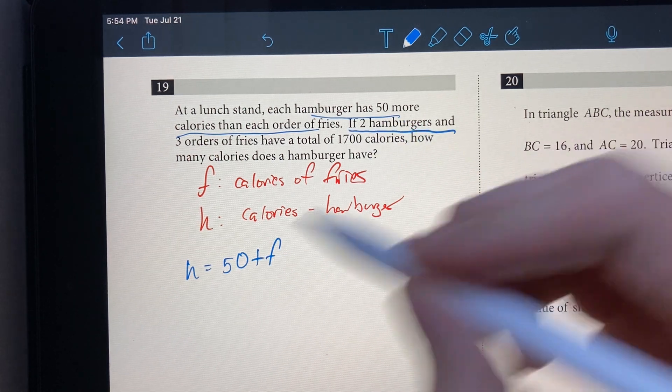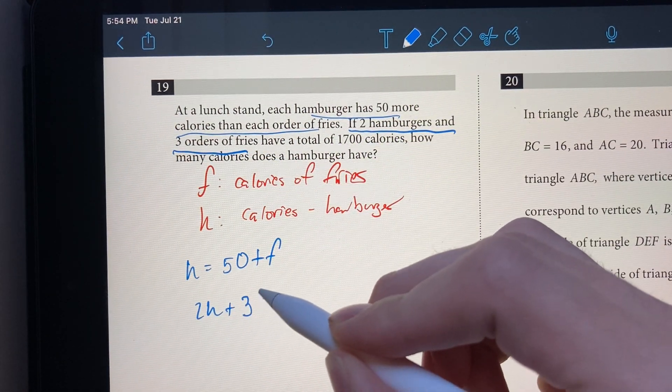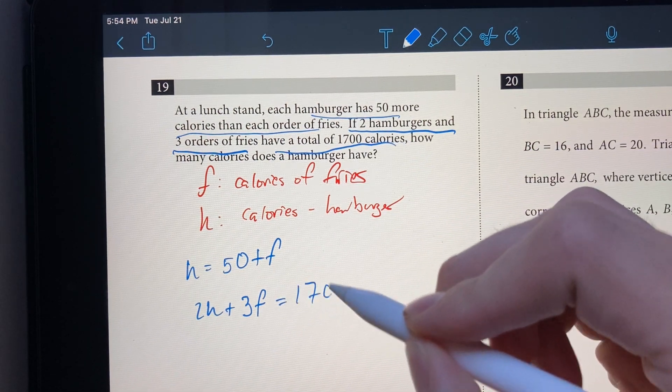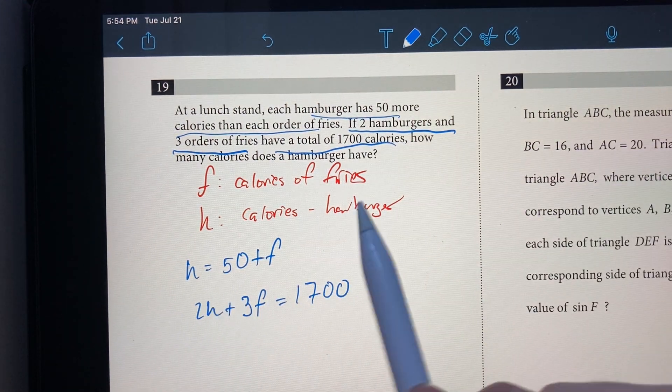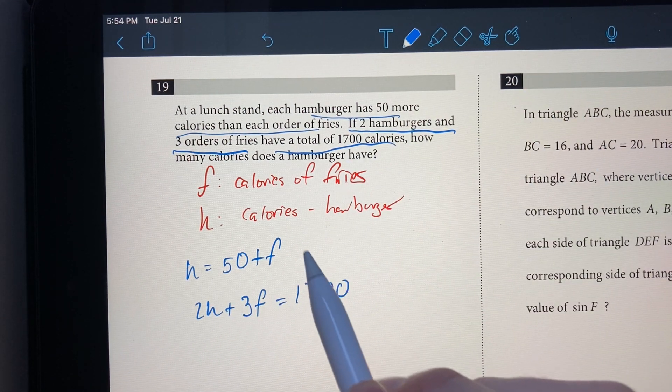It also gives us that two hamburgers and three orders of fries have a total of 1,700 calories. So now that we have two equations describing this situation, and we want H, which is the calories of a hamburger.